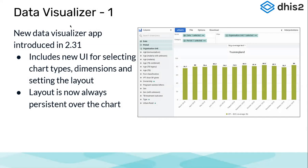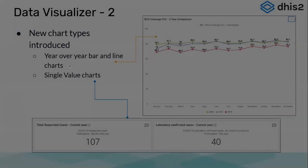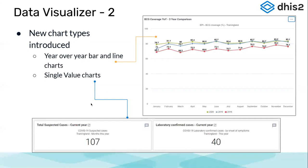The data visualizer has been around a long time and has evolved over time. A new visualizer app was introduced in version 2.31 with a new interface for selecting chart types, dimensions, and setting layouts. The layouts are now always persistent over the chart — earlier they were hidden in the layout option, but now you see the layout always on top of your chart and any required changes can be made quickly.